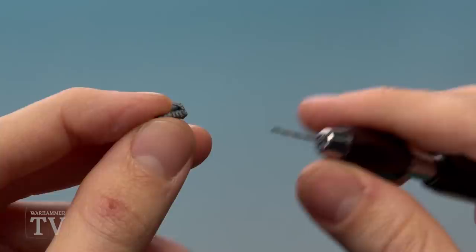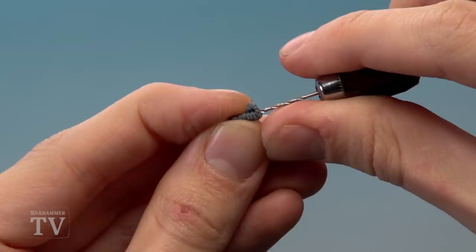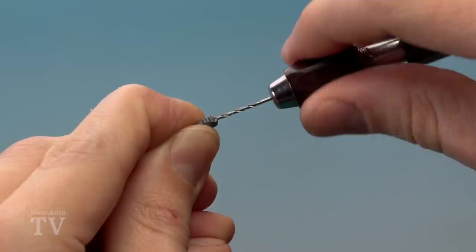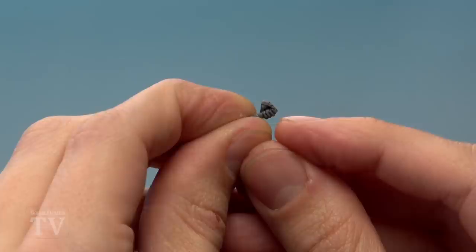Once you've removed that blade of the power sword, we're then ready to drill a hole through the hand, and we're looking to go all the way down through the grip of the sword there. So I'm just going to start up here, and just really take my time slowly working my way through, checking constantly to make sure I'm keeping the drill straight.